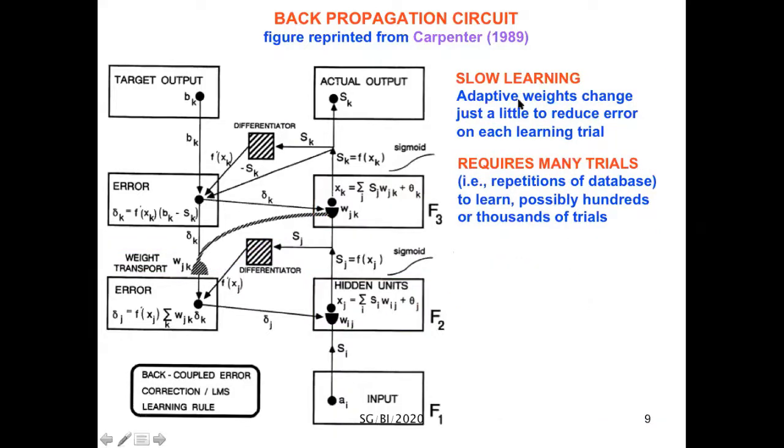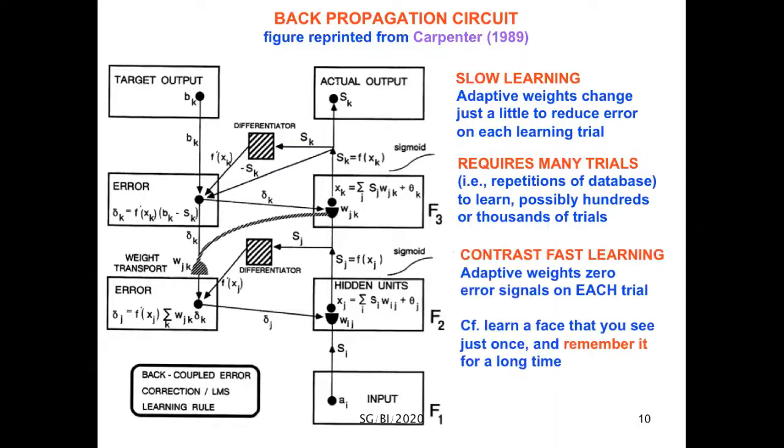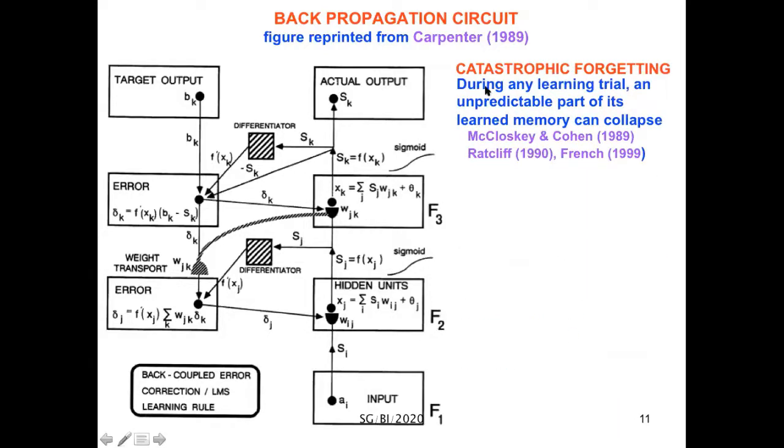This is both a non-local operation and a non-biological one. Moreover, learning is slow. The adaptive weights change just a little to reduce the error on each learning trial. Therefore, it requires many trials to learn often—possibly hundreds or thousands of trials to learn a database. This is to be contrasted with fast learning, where adaptive weights can zero error signals on each trial. For example, you can learn a face that you see just once and remember it for a long time.